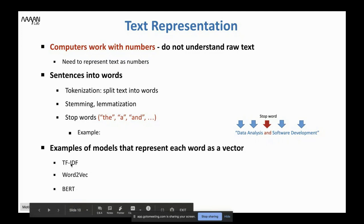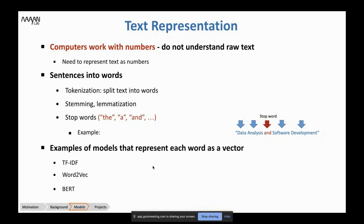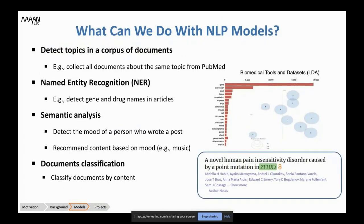What can we do with NLP models? We can detect topics in a corpus of documents. Here is an example from a recent talk at the lab — a biomedical tool and databases collected from PubMed. We found nine different topics, and you can see topic number one with the top 20 words that describe it. All papers affiliated with topic one are mostly around gene expression and patient tissue — we can understand what the topic is about.